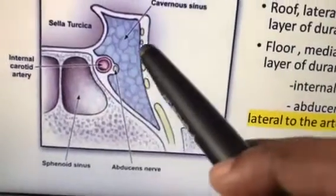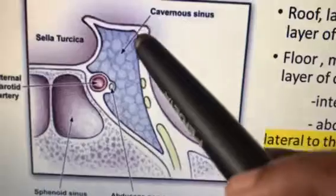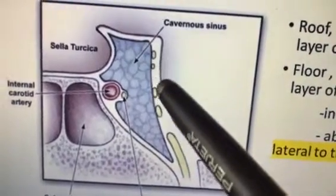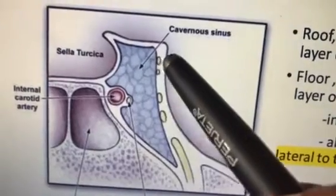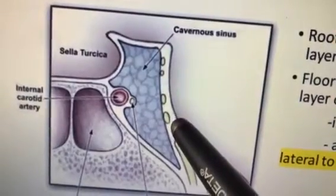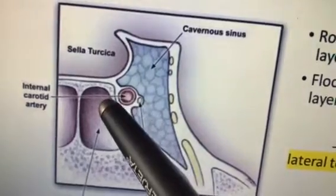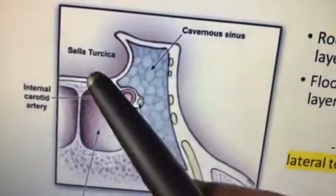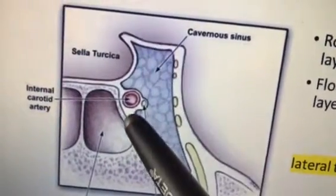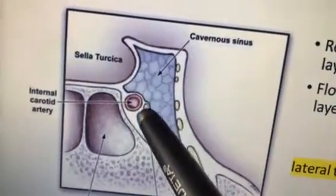Cavernous sinus MCQs: the nerves present in the lateral wall of the cavernous sinus are four — oculomotor, trochlear, ophthalmic division of trigeminal, and maxillary division of trigeminal. These four nerves form the lateral wall. The medial wall has the pituitary fossa and the sphenoidal air sinus. The roof is lined by the meningeal layer and the floor by the endosteal layer.